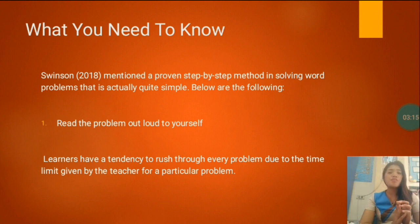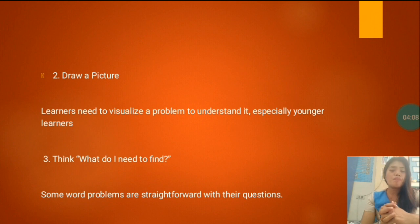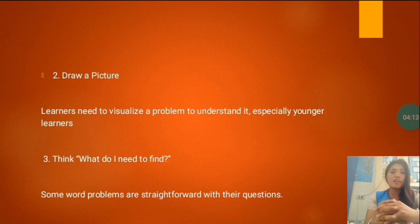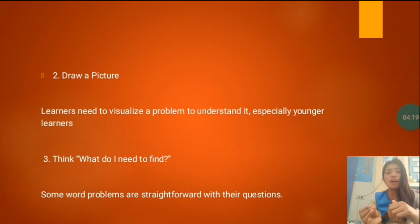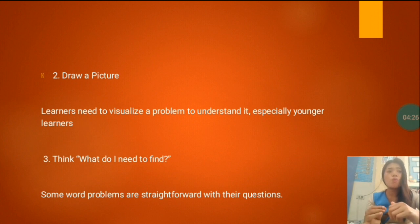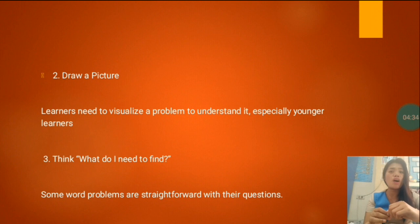Number two: draw a picture. Learners need to visualize a problem to understand it, especially younger learners. As they get older, they can start to visualize in their head. But at a young age, they should be drawing out a picture that explains what the problem is all about. The picture should take into account all the aspects of the problem.